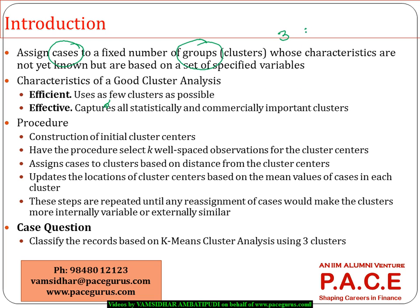Probably I can say three groups or four groups. The prime intention is the group's characteristics — the group's characteristics are not known initially. They have to be determined based on a set of variables which I identify.